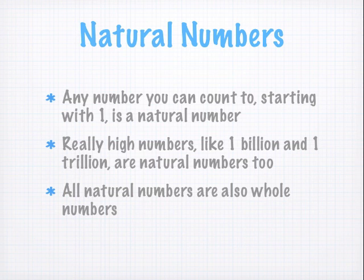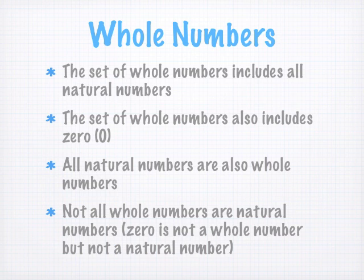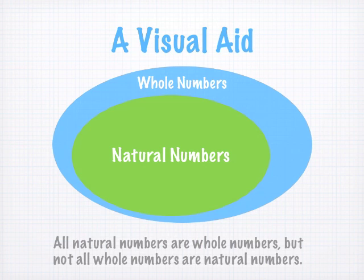Once you understand natural numbers, whole numbers will be really easy. Notice that natural numbers include any number you can count to, starting with one. All natural numbers are also whole numbers, but there's one more number in the set of whole numbers: zero. So the set of natural numbers includes any number you could count to starting at one, while the set of whole numbers includes all natural numbers and also includes zero. Zero is not a natural number, but it is a whole number. That's the only difference between natural numbers and whole numbers.